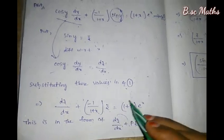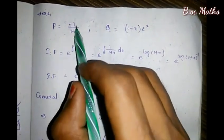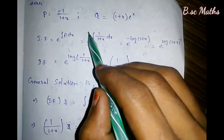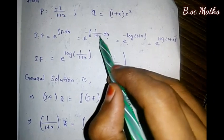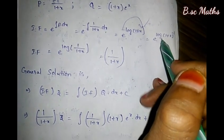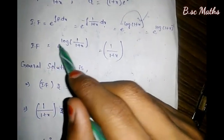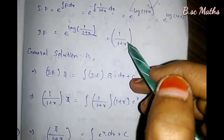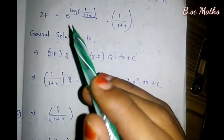Here P equals minus 1/(1+x) and Q equals (1+x)·e^x. Integrating factor is e to the power of integral P dx, so e to the power of minus integral 1/(1+x) dx. Integral of 1/(1+x) dx is log(1+x), so integrating factor equals e to the power of minus log(1+x), giving 1/(1+x).